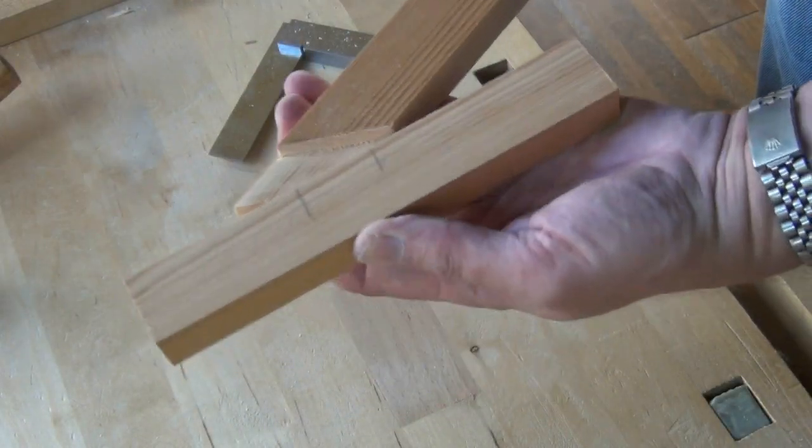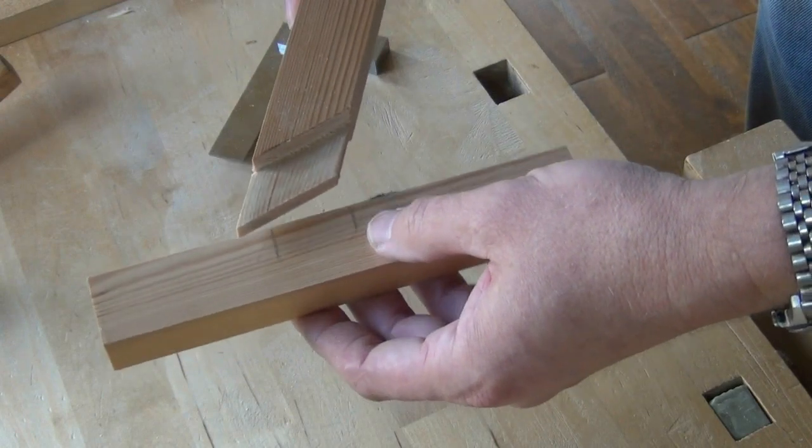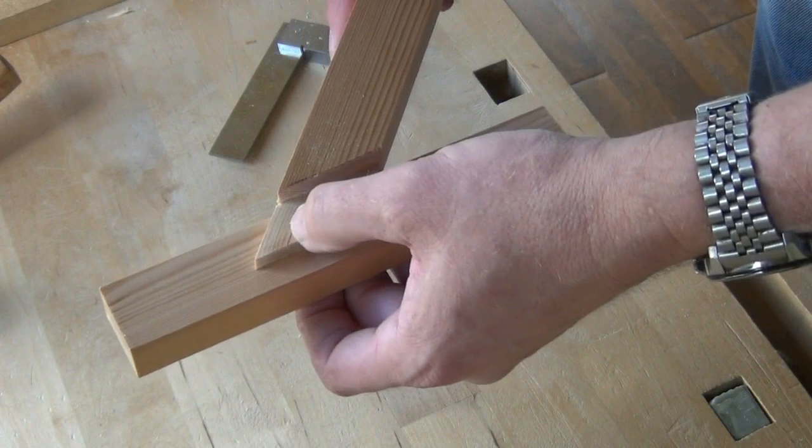Now the tenon is a nice snug fit in the mortise, we can set about marking up for the ends of the tenon and cutting them square.